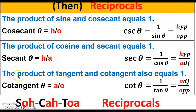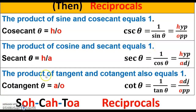Reciprocos. The product of sine and cosecant equals one. The product of cosine and secant equals one. The product of tangent and cotangent also equals one.